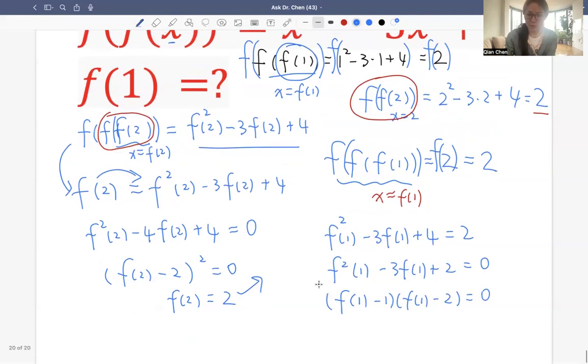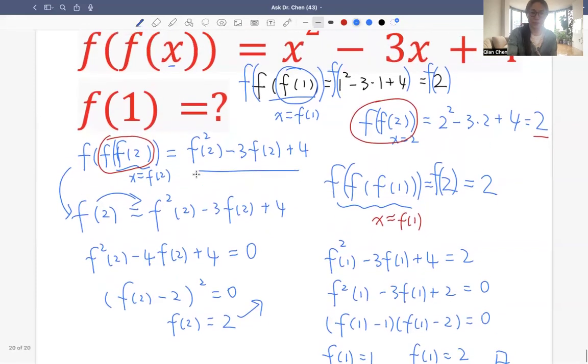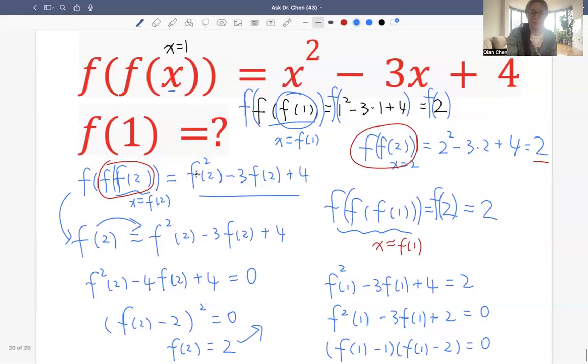We have two factors. Factored out to be 0. Each factor can be 0. The first one gives us f of 1 equals to 1. The second one gives us f of 1 equals to 2. Okay. Problem is solved. So that means f of 1 can be 1. f of 1 can be 2.